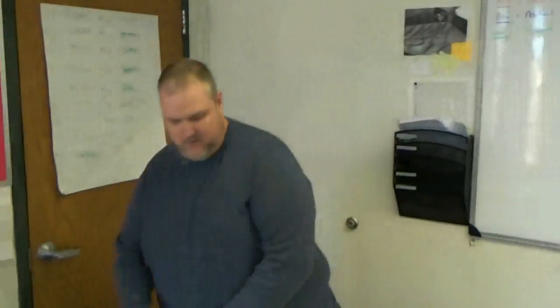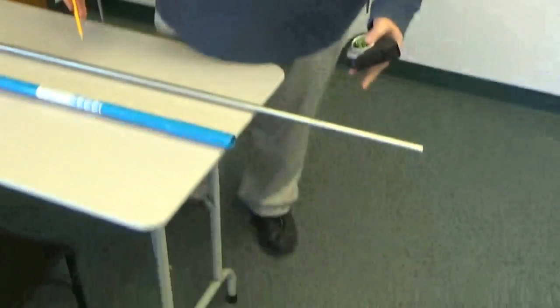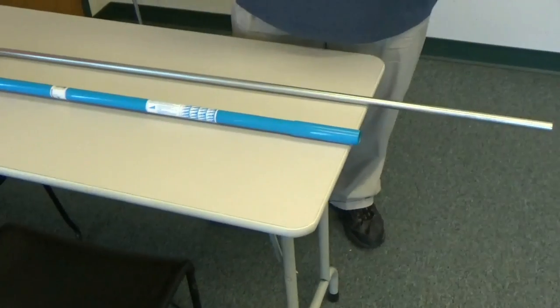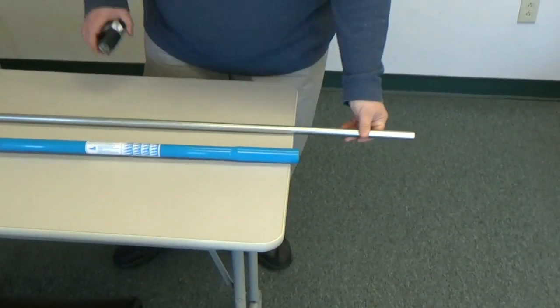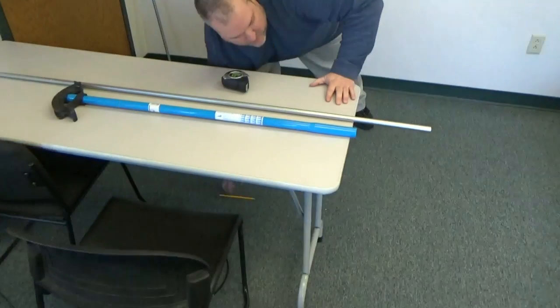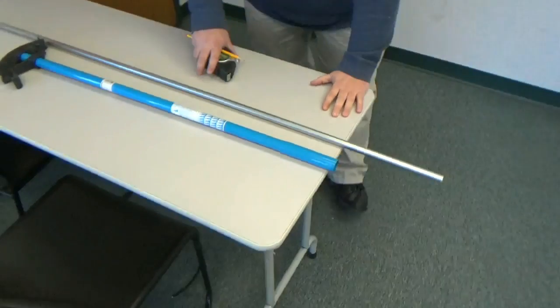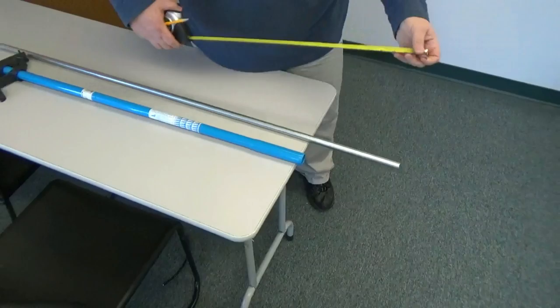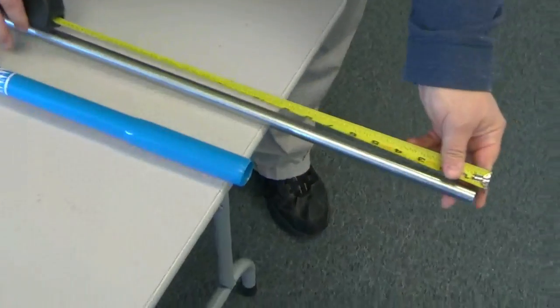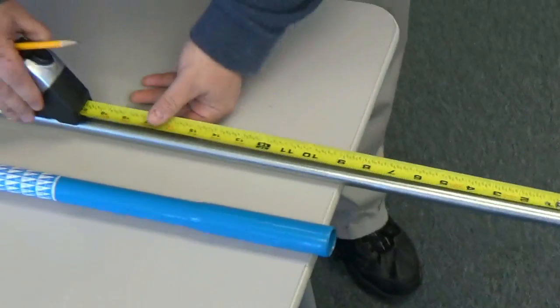When we do it on a pipe, we're doing half inch conduit, we need a measuring tape, and we need a pencil. Our first mark, we're just going to pick. We're going to call this six inches. So we're going to make a mark at six inches.